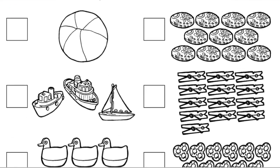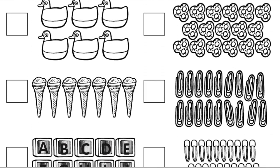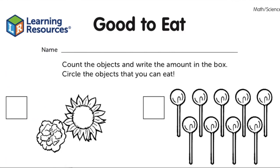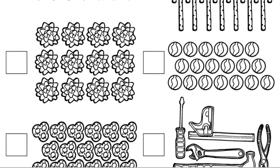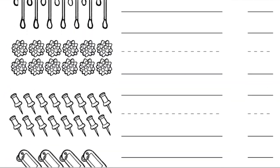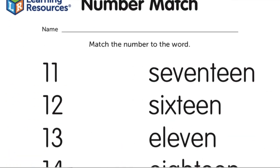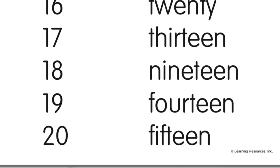Learning Resources has a free printable called Count to 20. Kids can practice spelling out numbers, so instead of writing the numeral 4, they spell f-o-u-r. There's also matching the number 11 to the word eleven.